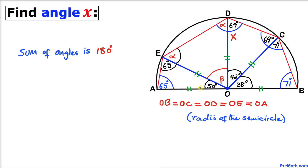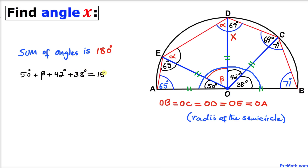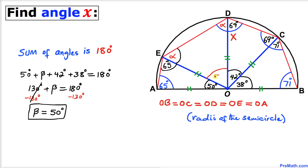The whole straight angle at O is 180 degrees, so adding all the individual angles along it: 50 degrees plus beta plus 42 degrees plus 38 degrees equals 180 degrees. Solving: 130 degrees plus beta equals 180 degrees. Therefore beta equals 50 degrees.